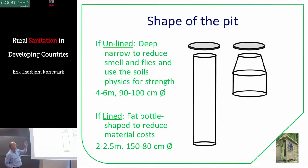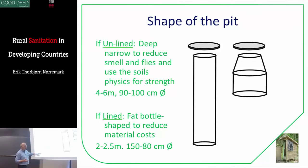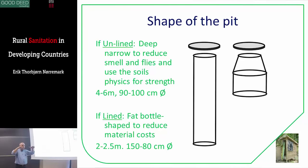For the unlined pits, you need to have them deep and narrow — 4 to 6 meters deep, 90 to 100 centimeters diameter. If you do the lined pits, it's an advantage if you have a system where you have a fat bottle shape — you will reduce the material cost quite considerably. And in places with a high water level, you don't need to go very deep. If you're using bricks, the technique is called corbeling, where you use fewer and fewer bricks, decreasing the diameter as you go up.